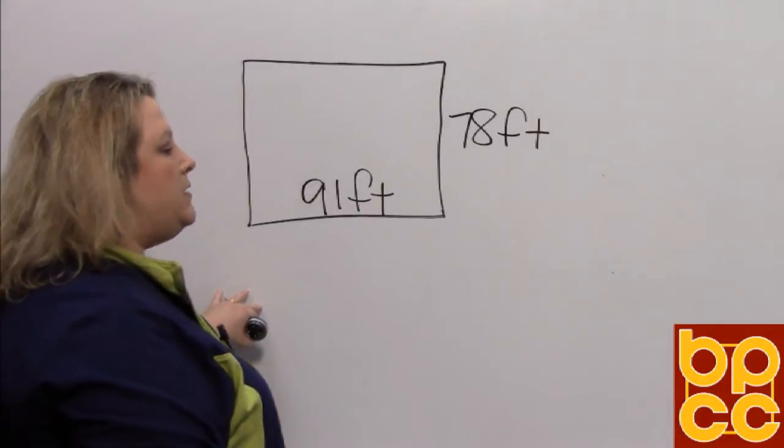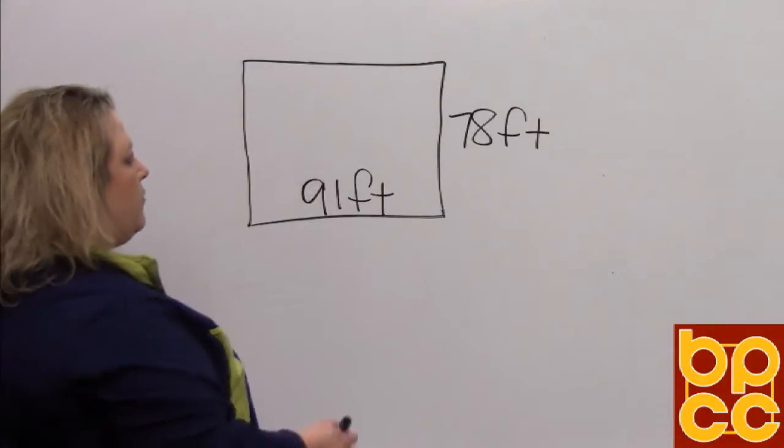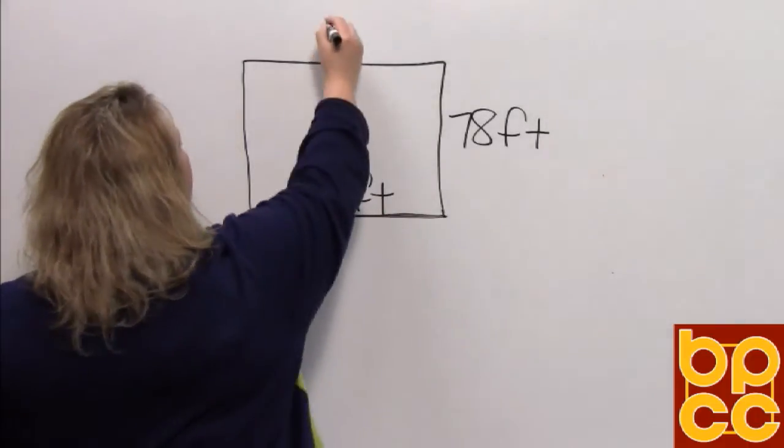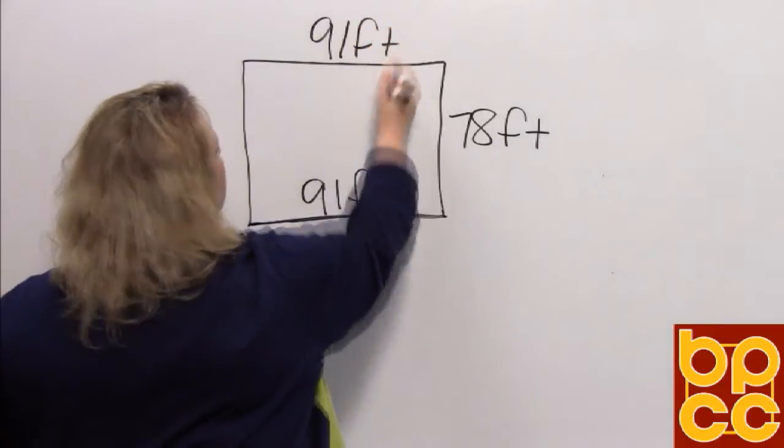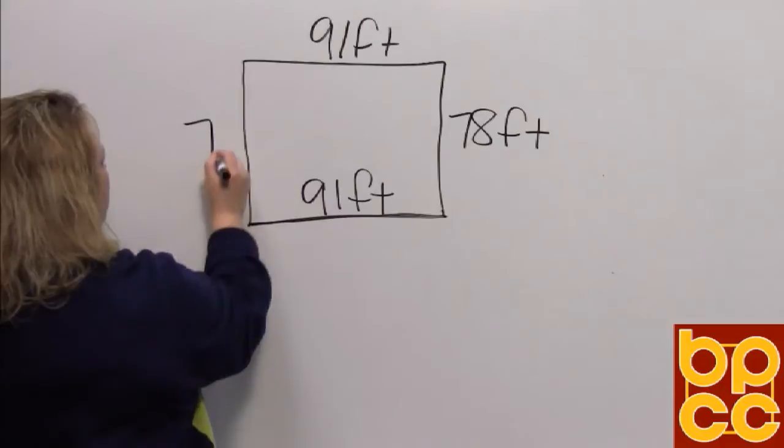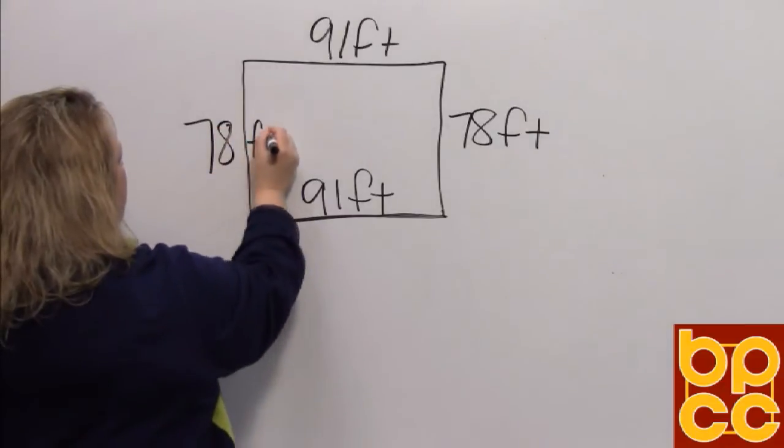In a rectangle, you need to know that opposite sides are equal. So if the bottom is 91 feet, then the top is also 91 feet. If the right hand side is 78 feet, then the left hand side is also 78 feet.